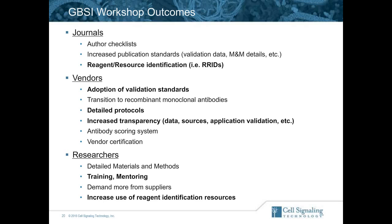Another topic from the GBSI meeting was the need for detailed protocols, and we like to think we're ahead of the curve on that — but can always do better. The meeting also called for vendors to have increased transparency, to show more data, to talk about where the antibody data is derived from, to make resellers more accountable for what they're reselling, and to show more application-specific validation data. Researchers were tasked with finding ways to better mentor especially younger students in their lab, and to increase the use of the reagent identification resources mentioned earlier.